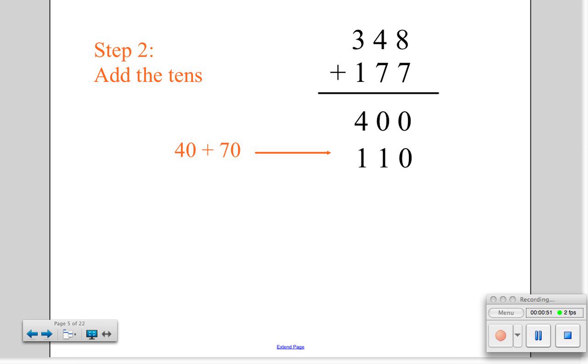The second step is to add the tens. It's important to remember that digits represent numbers. In this case, the 4 in 348 represents 40, and the 7 in 177 equals 70. So we're adding 40 plus 70, which equals 110.